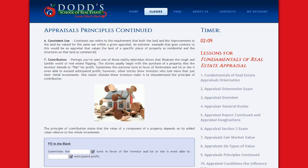Consistent use refers to the requirement that both the land and the improvements to the land be valued for the same use within a given appraisal. An extreme example that goes contrary to this would be an appraisal that values the land for a specific piece of property as residential while the structure on that land is commercial.